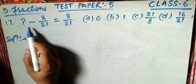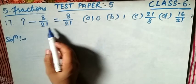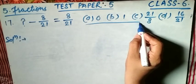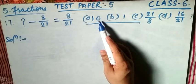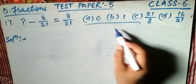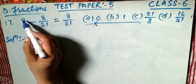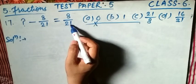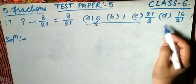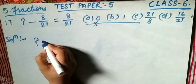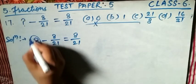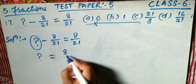Now Question 17: the blank minus 8/21 equals 8/21. We have to select the correct option. Option A: 0, B: 1, C: 21/8, D: 16/21. Option A is not possible because 0 minus something gives a negative result, not 8/21. Now write the equation as it is: blank minus 8/21 equals 8/21.